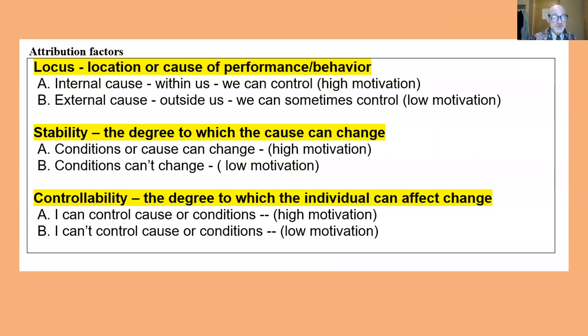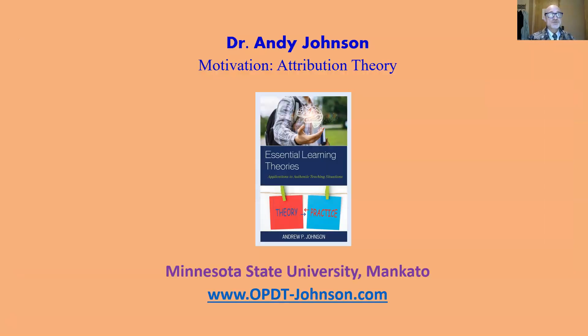To summarize: locus, stability, and controllability — the three elements of attribution theory and motivation.